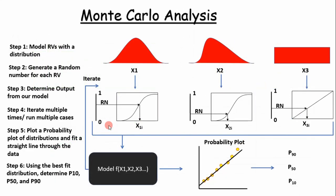Once we have distributions of random variables, we can apply Monte Carlo simulation, as shown here. Essentially what we're doing is we have our mathematical model of our random variables — in this case our B boundary dominated and the time to end the linear flow — and then we use a random number generator to generate values between 0 and 1 for several different cases. We iterate and plug it into our model that calculates EUR, eventually get several cases, fit a probability plot to that, and determine our P10, P50, and P90. That was a lot of information in a short amount of time, but we're going to step into Excel. You can apply this method not only in petroleum engineering but to mechanical engineering problems and any type of engineering problem — so just focus on the concept.